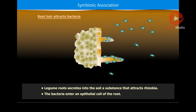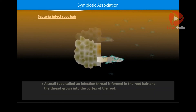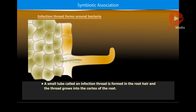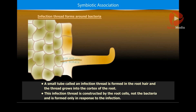The bacteria enter an epithelial cell of the root. A small tube called an infection thread is formed in the root hair, and the thread grows into the cortex of the root. This infection thread is constructed by the root cells, not the bacteria, and is formed only in response to the infection.